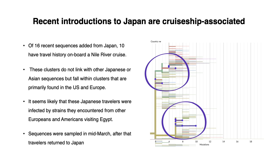As sequences were sampled in mid-March, after the travelers returned to Japan, it seems likely that these Japanese travelers were infected by strains they encountered from other Europeans and Americans visiting Egypt. This is evidence that variants primarily circulating in Europe and the US were being exported around the world in early March via global travel.